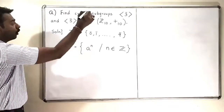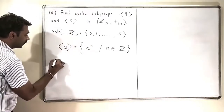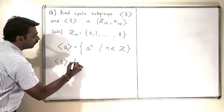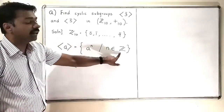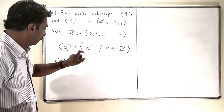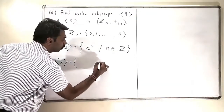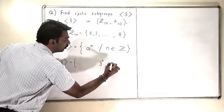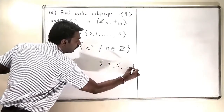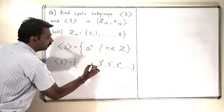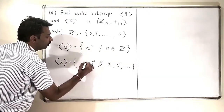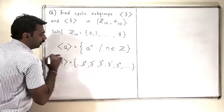For the first problem, the cyclic subgroup generated by 3̄, I am going to write all the positive and negative powers of 3̄. So I will get 3̄ raised to 0, 3̄ raised to 1, 3̄ squared, and so on. Similarly, I will also calculate the negative powers: 3̄ raised to minus 1, 3̄ raised to minus 2, and so on.